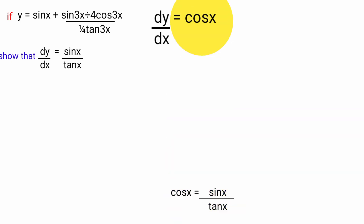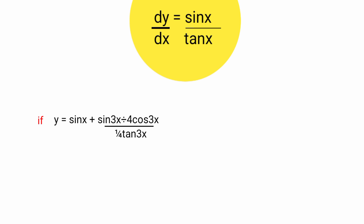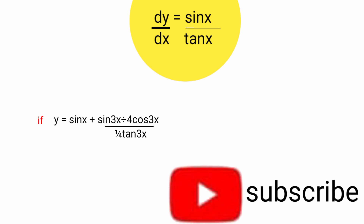So to confirm: dy/dx equals sin x over tan x. We showed that if y equals sin x plus sin 3x divided by 4 cos 3x all over 1 over 4 tan 3x, then dy/dx equals sin x over tan x. Thank you for watching.